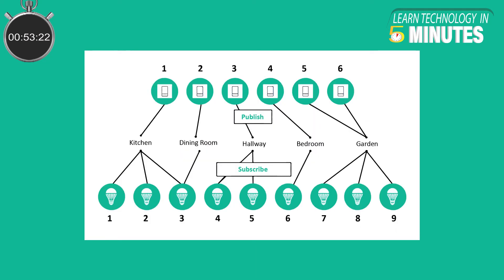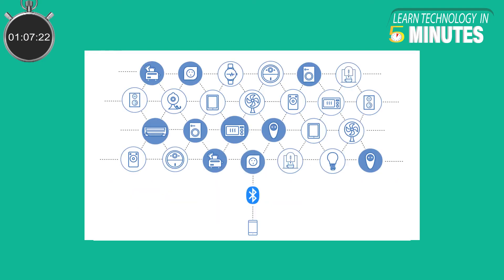BLE Mesh is a many-to-many style of communication with provisions for message relay from one device to another, creating a flexible mesh topology with multiple potential paths between nodes to ensure message delivery. Mesh functionality is a vital update for new applications in lighting, sensor networking, predictive maintenance, asset tracking, and positioning.